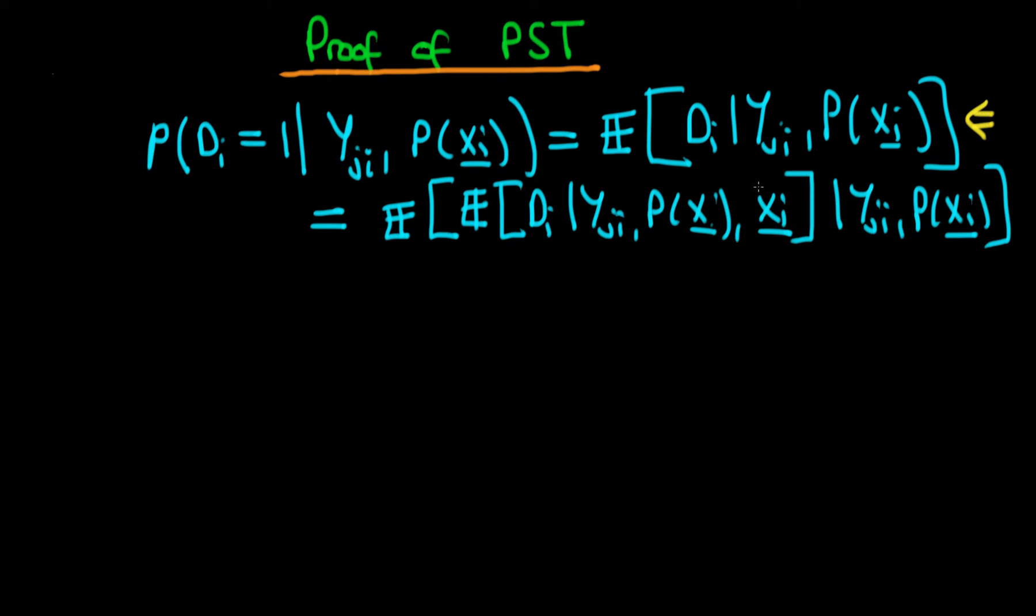If we already have xi, then we already have p of xi, because each set of covariates defines a particular propensity score. Note that it's not the case that if we have p of xi that we necessarily have xi, because the propensity score isn't unique to a particular set of covariates. But what this means is that we can essentially take out this inner conditioning on p of xi, so we're just left with the expectation of di, given yji and given xi for this inner expectation.